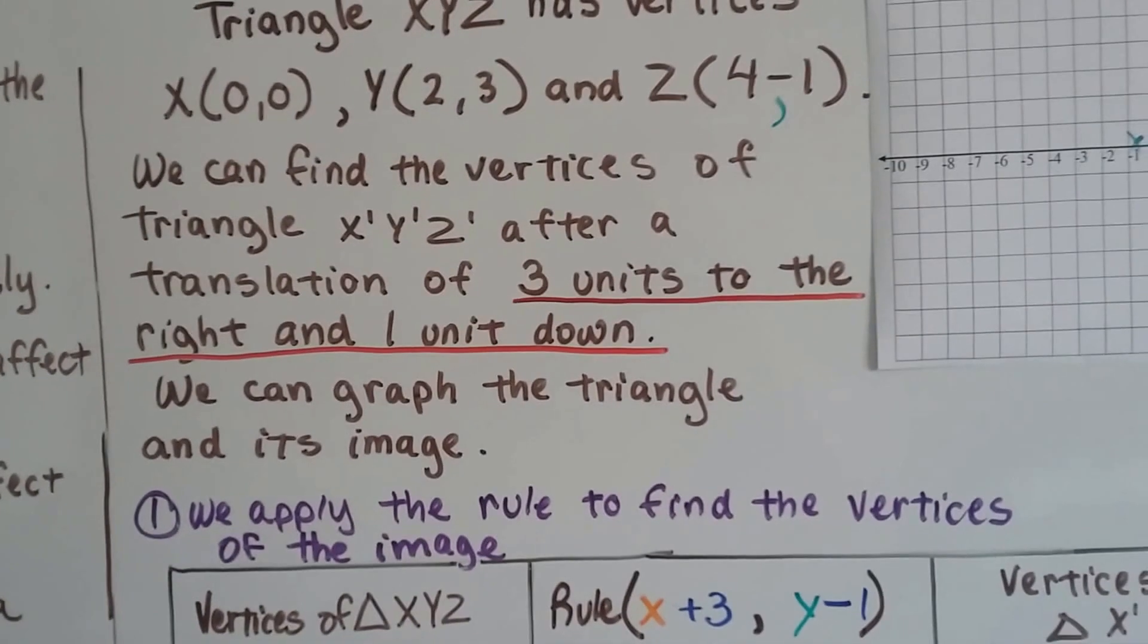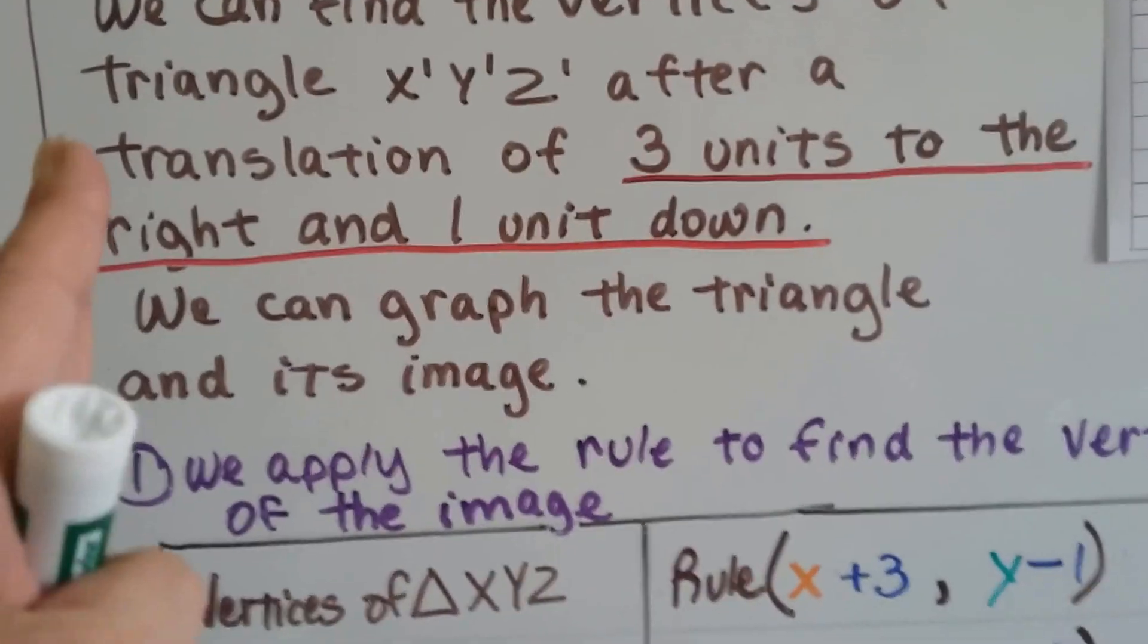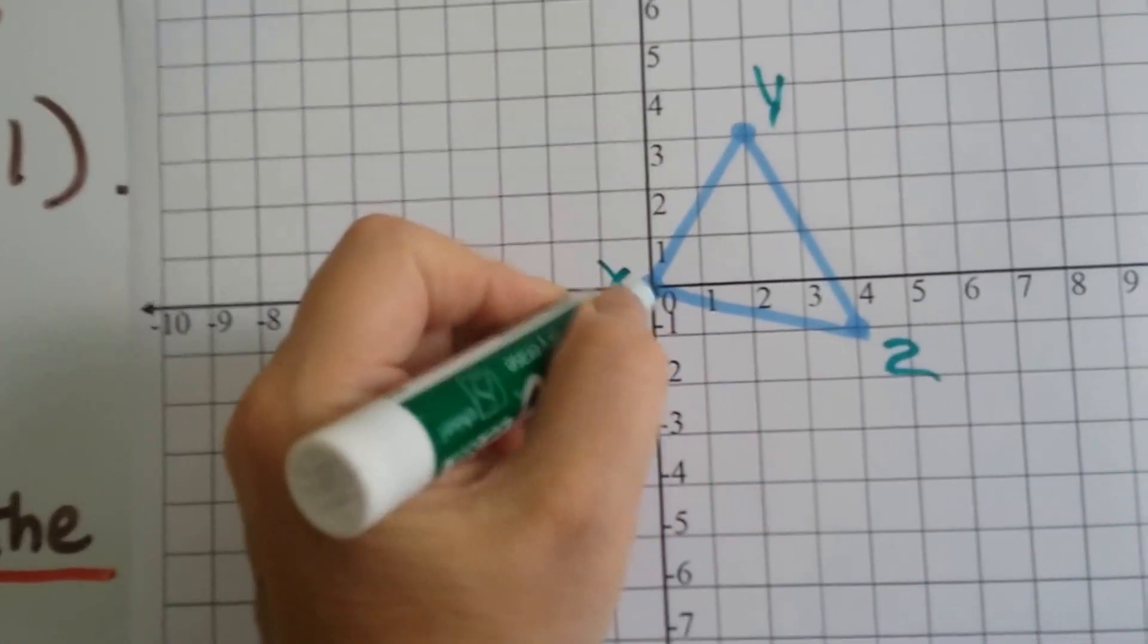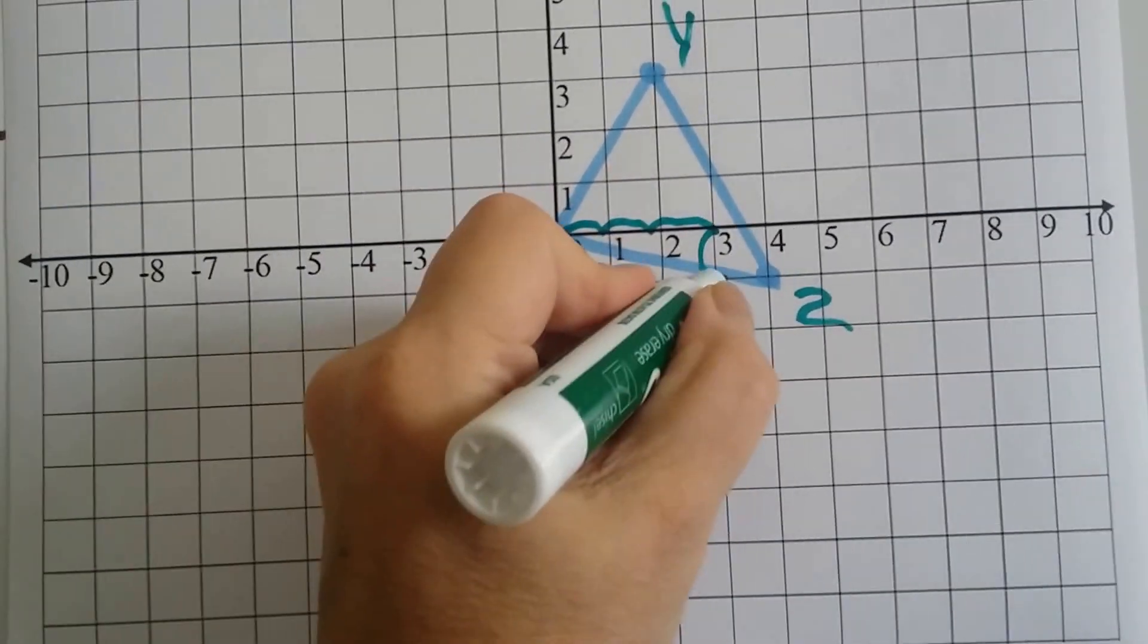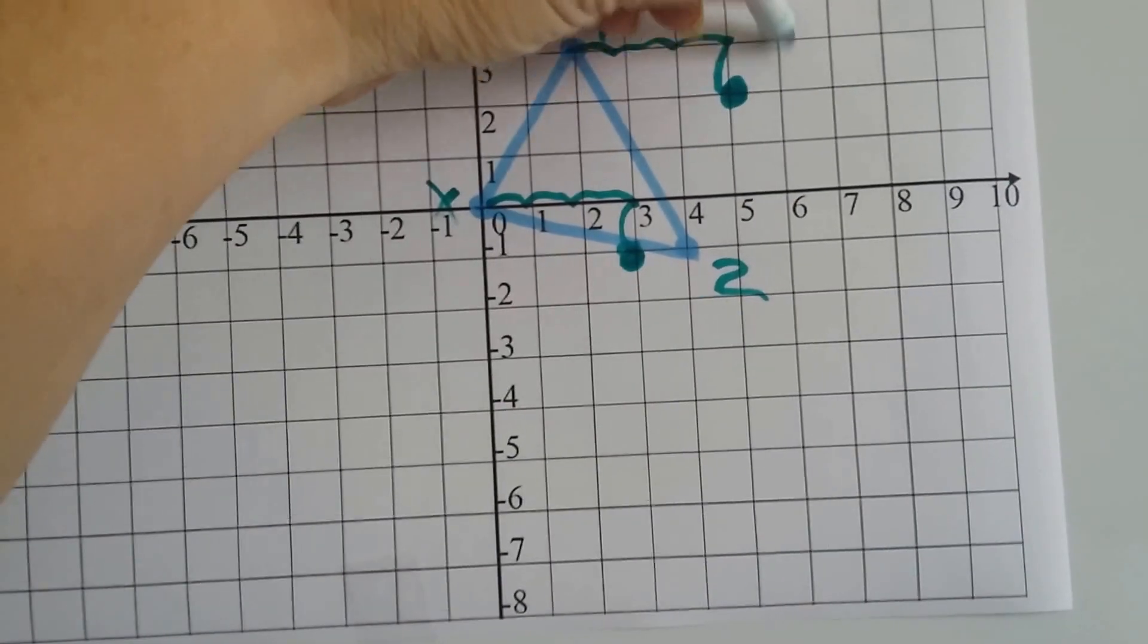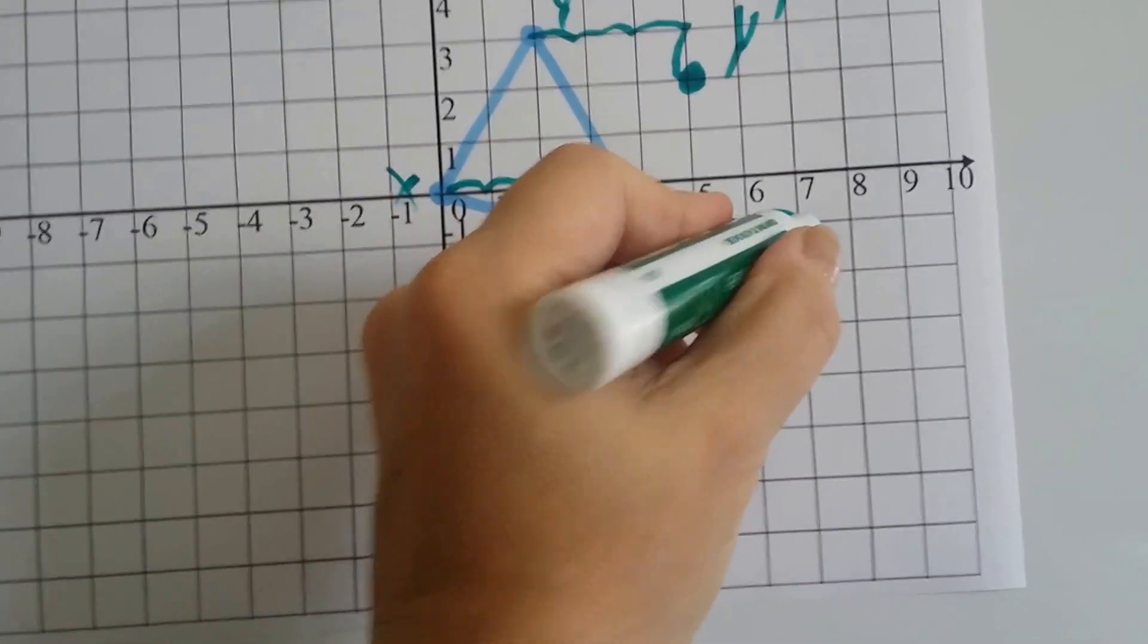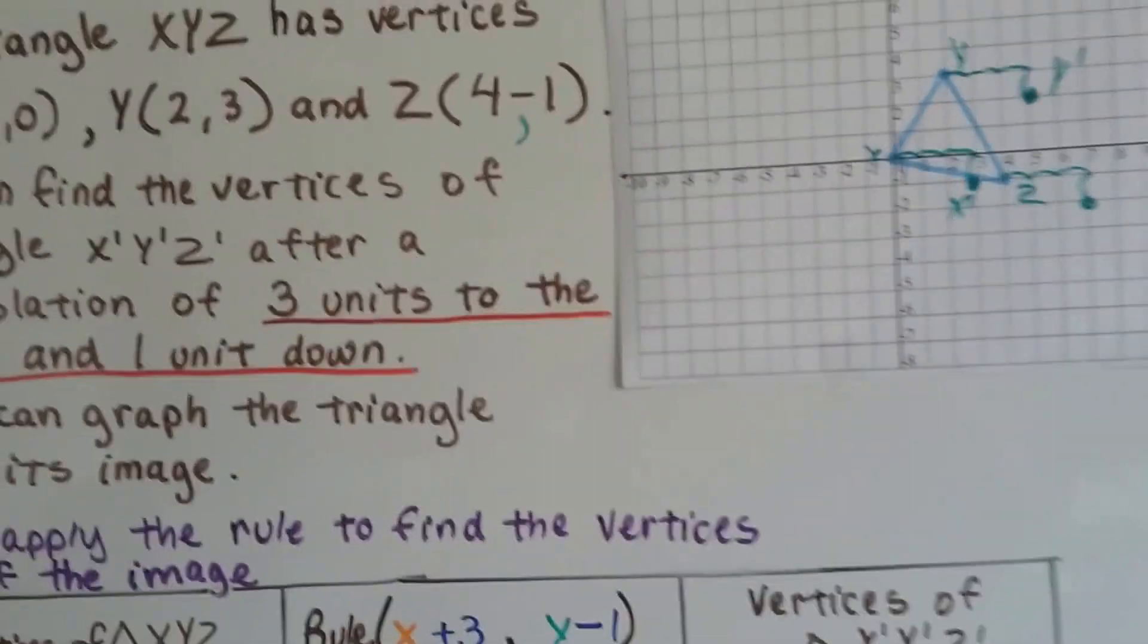So we can find the vertices of triangle X prime, Y prime, Z prime after a translation. Remember, that's a sliding after a sliding of 3 units to the right and 1 unit down. So if X is going to go 3 units to the right and 1 unit down, it's going to go 1, 2, 3 to the right, and it's going to go 1 unit down, and X is now going to be here. And Y is going to go 3 units to the right, 1, 2, 3, and 1 unit down. And now Y prime is going to be there. So this is X prime. And Z was here, and it's going to go 1, 2, 3 units to the right and 1 unit down. And now it's going to be here. So we can graph this triangle and its image.